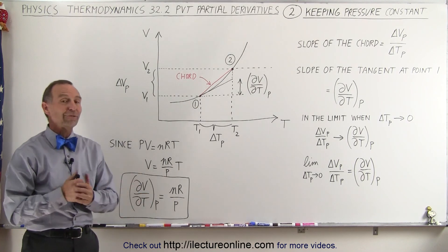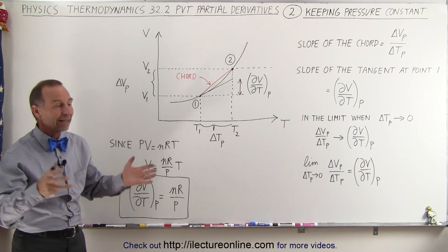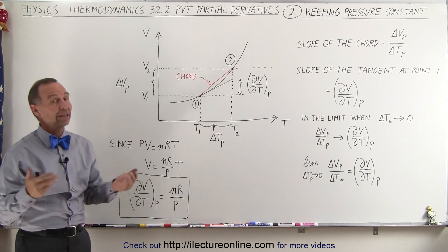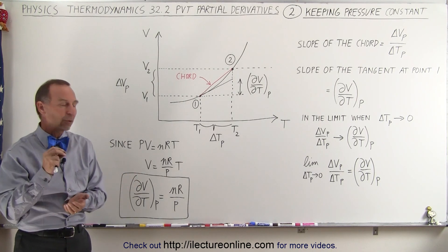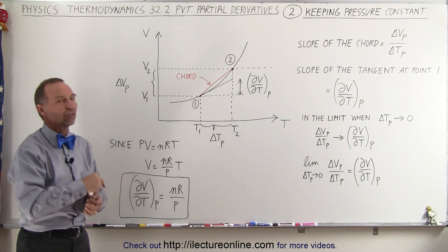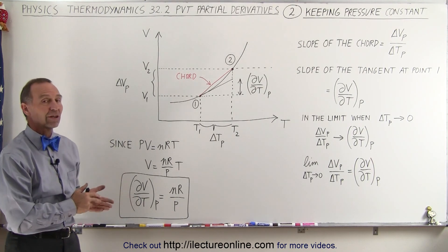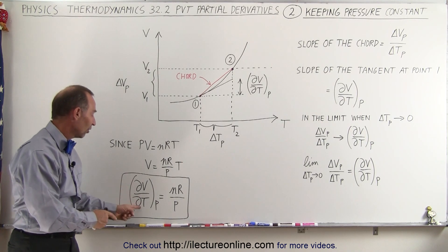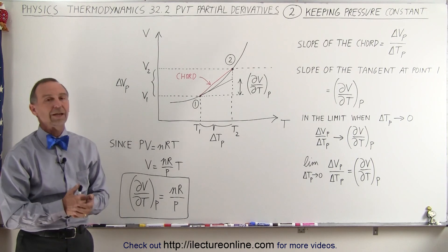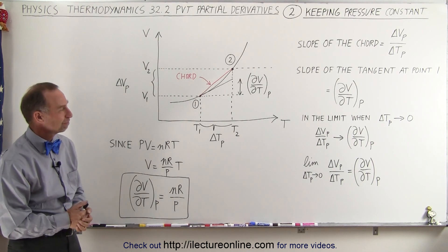That's our first introduction to one of the partial derivatives. We'll see more of these, and later we'll see examples of how to actually apply them. This is how we find each of the partial derivatives when volume, pressure, or temperature changes while keeping one of the others the same — in this case, pressure is constant and volume changes with respect to temperature. And that's how it's done. Thank you.